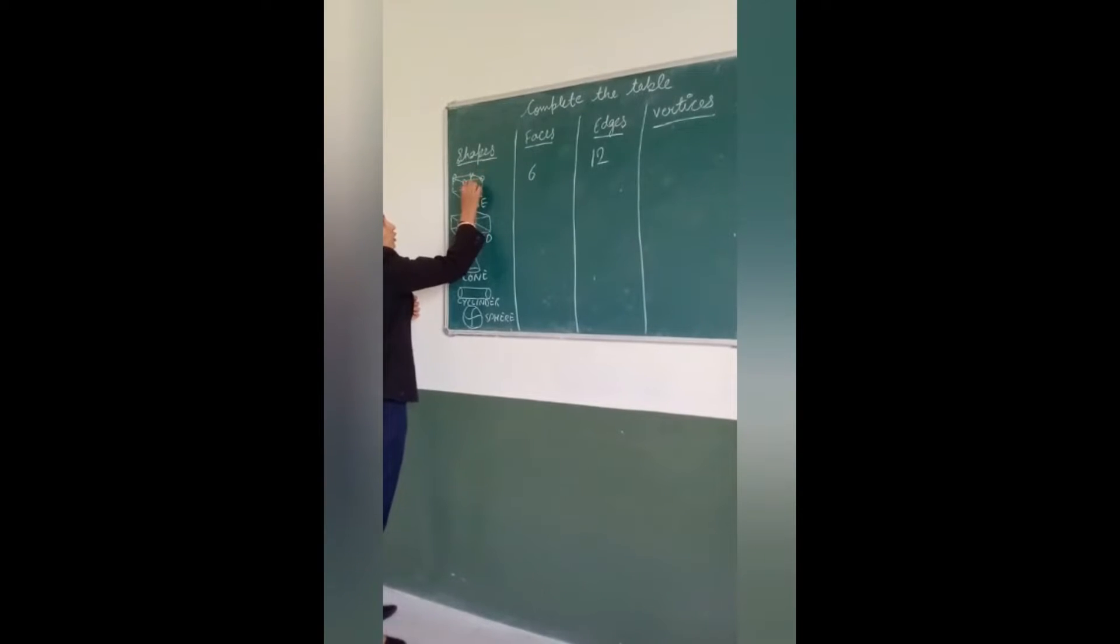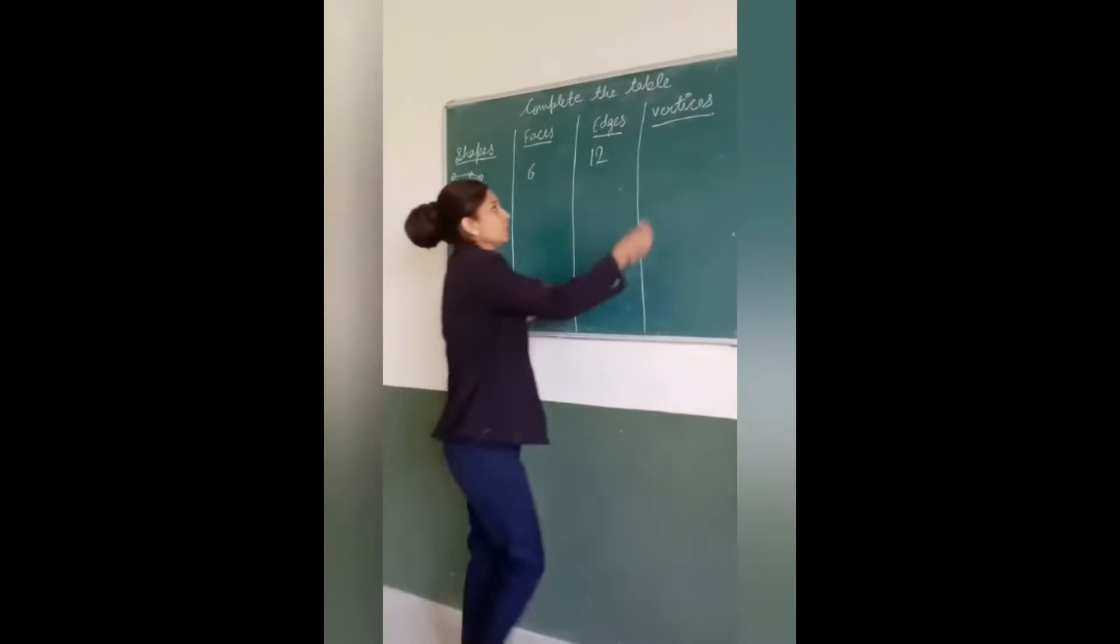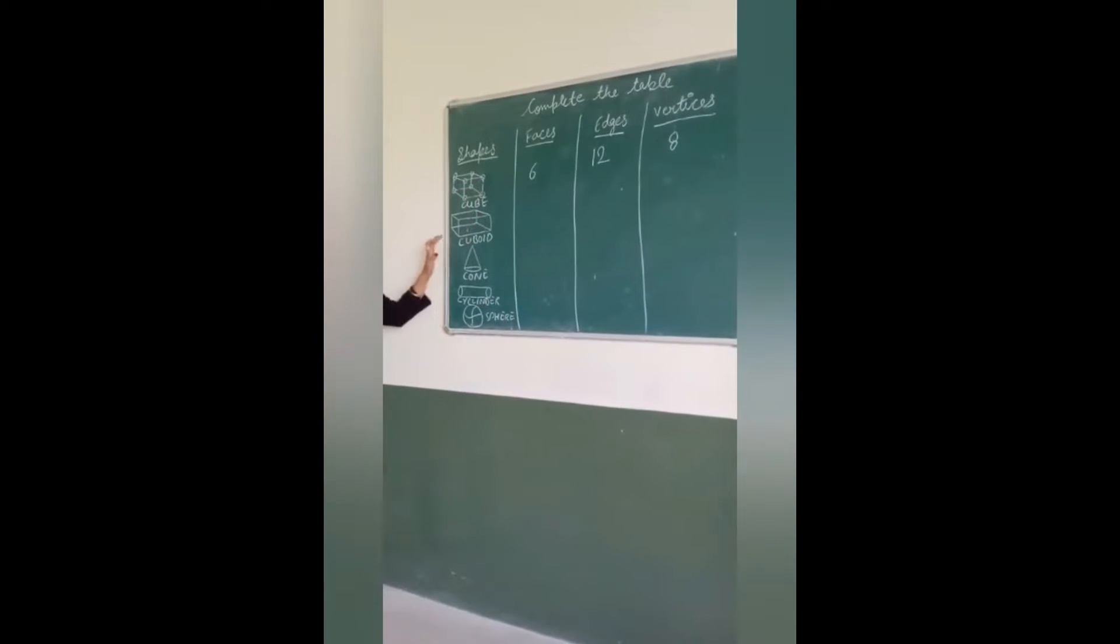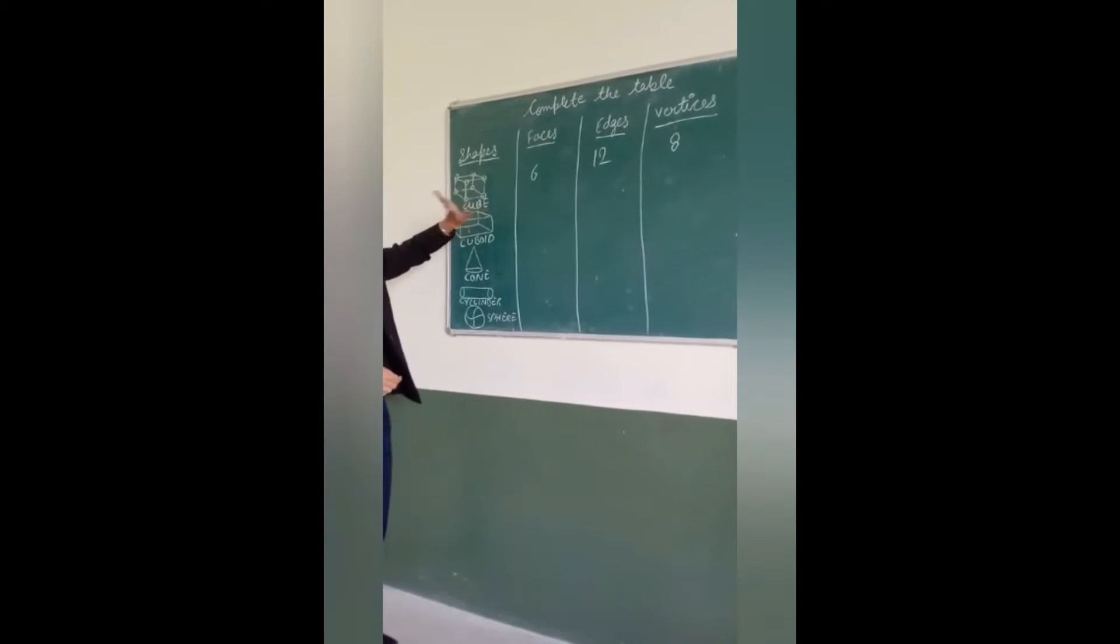3, 4, 5, 6, 7, 8. How many vertices? 8. And this is a cuboid. Same faces, same vertices, and same edges.